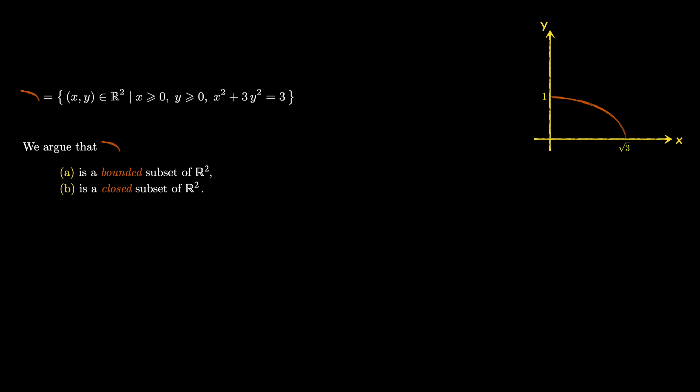Let me choose a point which is not on the orange curve. It is clear that I can find an open disk centered at that point that does not intersect with the curve. This shows that for this point, I was able to find a neighborhood lying entirely outside the curve. You have to convince yourself that this is indeed the case for any choice of point outside the orange curve.